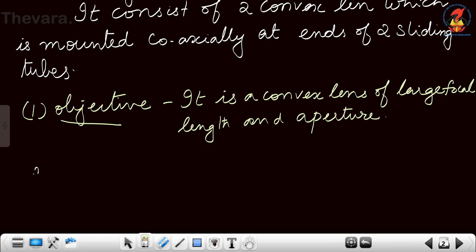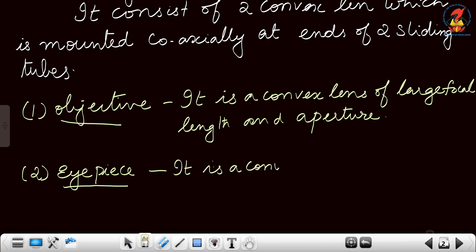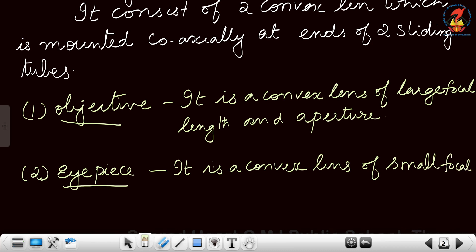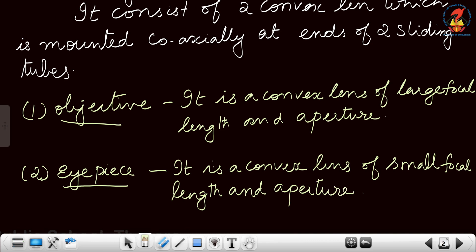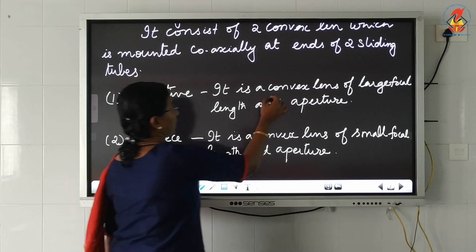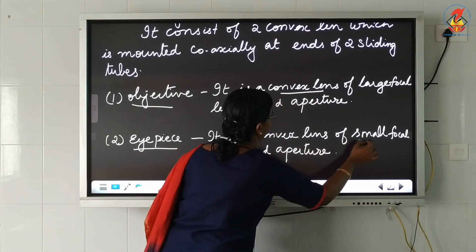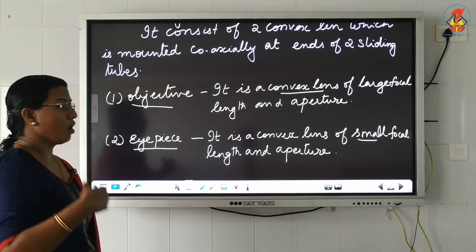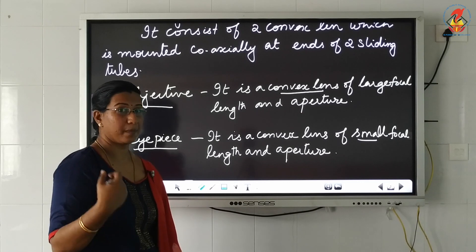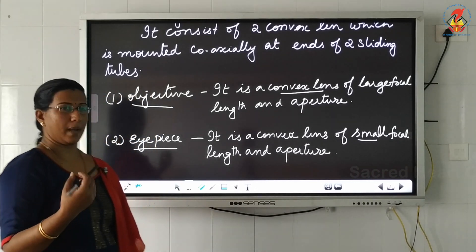The second one is the eyepiece. It is also a convex lens of comparatively small focal length and aperture — just the opposite of the compound microscope, in which the objective had small focal length. The telescope objective has large focal length and large aperture, whereas the eyepiece has small focal length and small aperture.